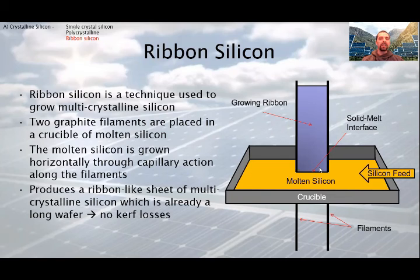The next and the last type is the ribbon silicon. It is a technique used to grow multi-crystalline silicon. The silicon is melted in a crucible, as you see on this drawing. Two graphite filaments are placed into it and pulled out slowly. The molten silicon is growing horizontally through capillary action along the filaments. It produces a ribbon-like sheet of multi-crystalline silicon, which is already a long wafer. So, there are no kerf losses.